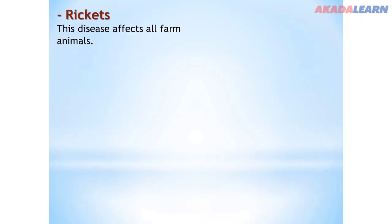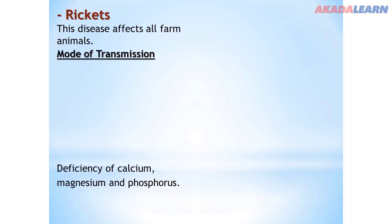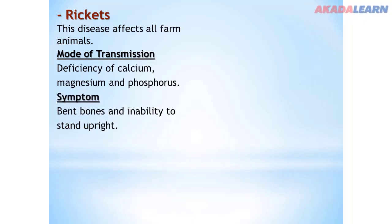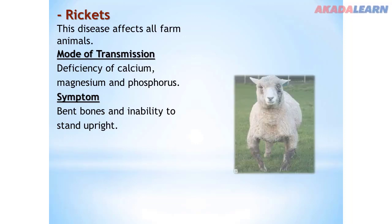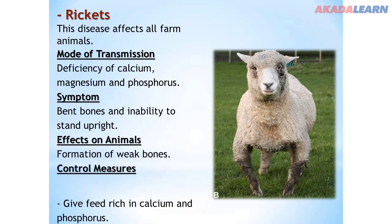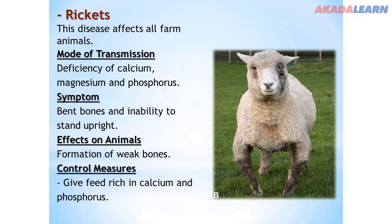Rickets also affects all farm animals. Mode: deficiency of calcium, magnesium, and phosphorus. Symptoms: bent bones and inability to stand upright. Effect on animals: formation of weak bones. Control: give feed rich in calcium and phosphorus, and give mineral licks.